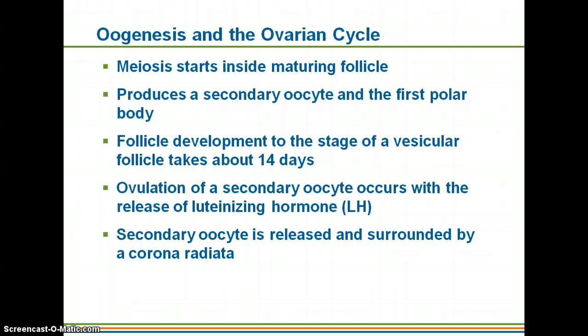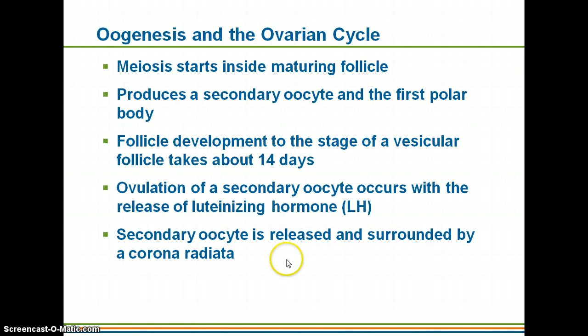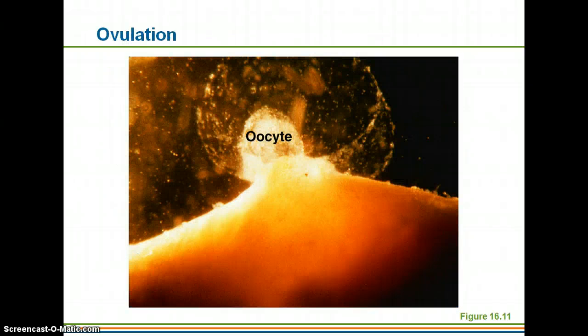Follicle development takes about 14 days. After about 14 days, ovulation will occur — the secondary oocyte will be released from the ovary. Luteinizing hormone, or LH, is one of the things that triggers ovulation and the release of the secondary oocyte. Whenever that secondary oocyte is released, it is surrounded by the corona radiata — it basically looks like a halo surrounding it. The purpose of that is to attract sperm toward the secondary oocyte. Here we have the secondary oocyte, and the halo around it is the corona radiata.